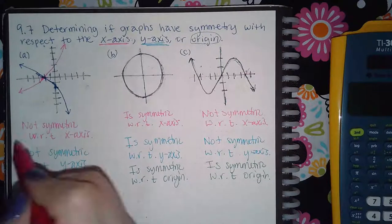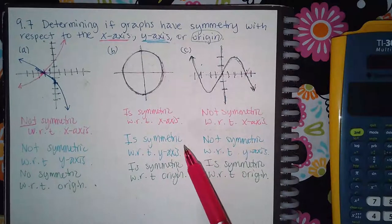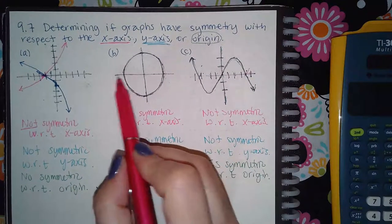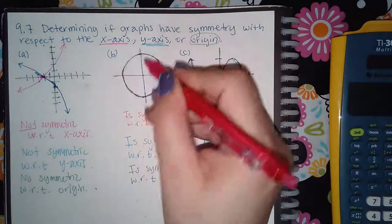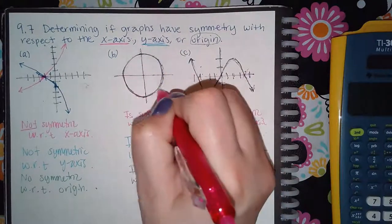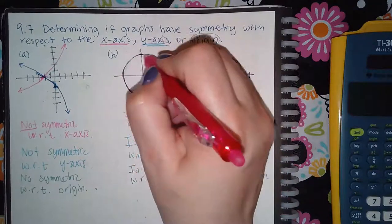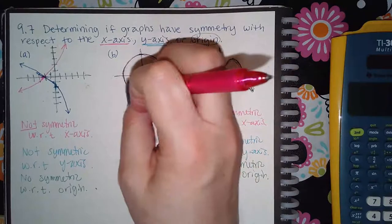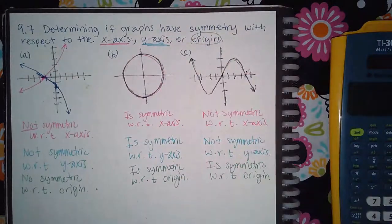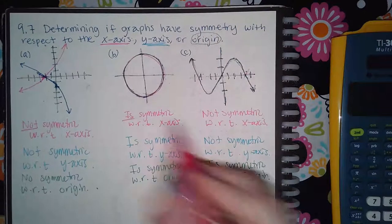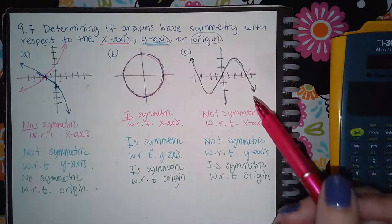Now looking at graph B: I imagine the x-axis, take what is on top and reflect it over, and take what is at the bottom and reflect it over. Does my pink graph land on top of the original graph? Yes it does, so this one is symmetric with respect to the x-axis.